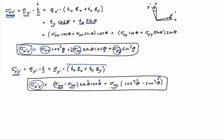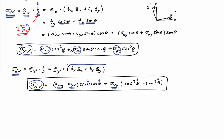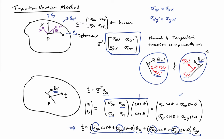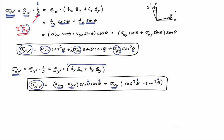That gives us sigma x prime x prime and the shear, but we don't yet have an expression for the normal stress in the y prime direction. To get sigma y prime y prime, we need to do something different — the traction vector I've been working with is on the plane whose normal is in the x prime direction, and the components on that face only involve sigma x prime x prime and sigma x prime y prime. So I'll use a section cut whose normal is in the y prime direction.